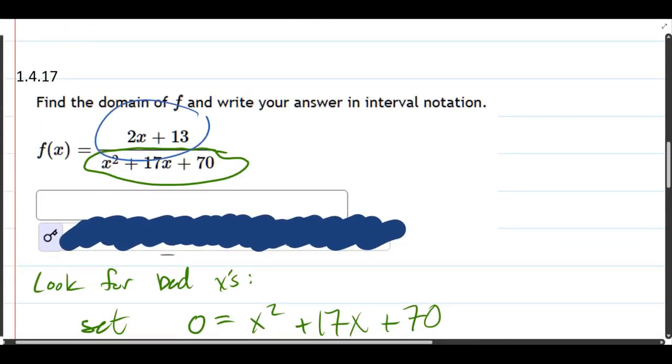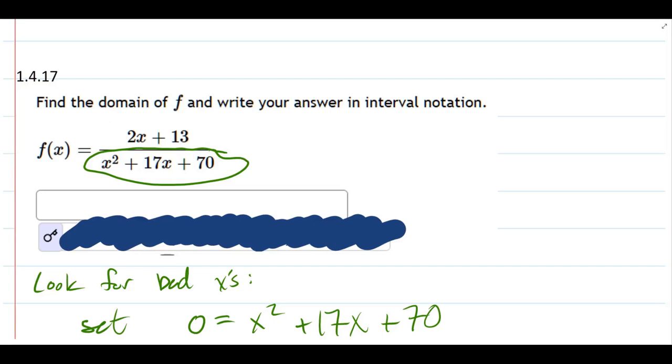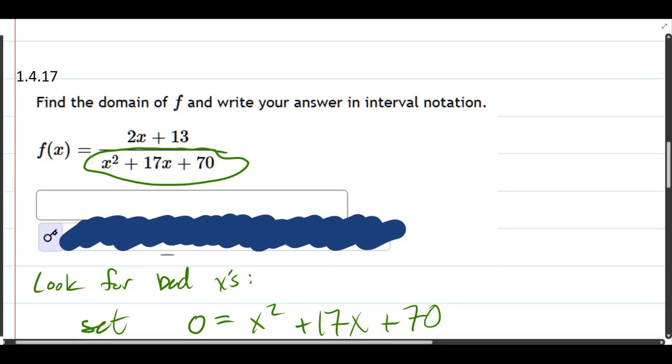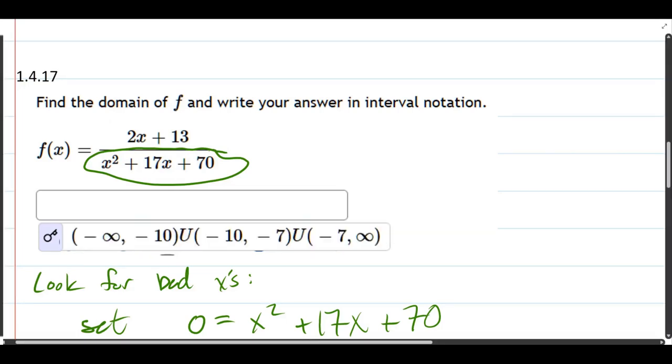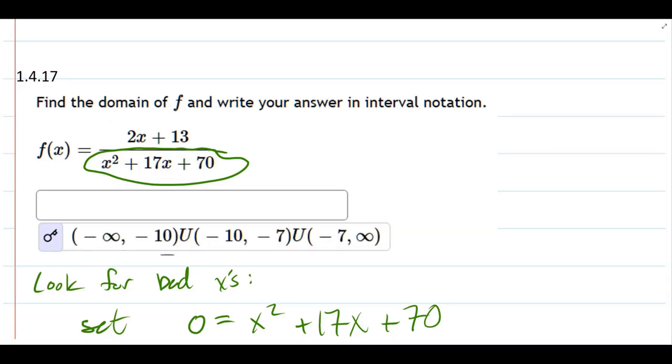So this will be our domain of this function. The numerator didn't matter in the domain. The numerator has a big effect on the graph, but it doesn't matter for the domain. The domain is just what x values should you not plug in, and it's all the ones that would make us divide by zero, which we just checked.